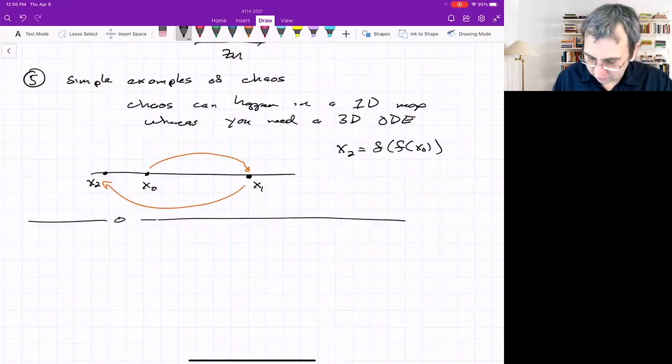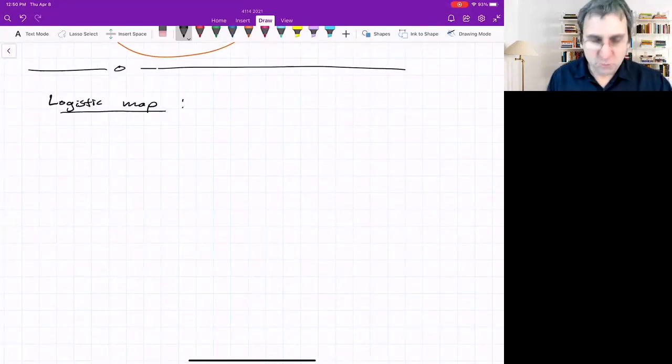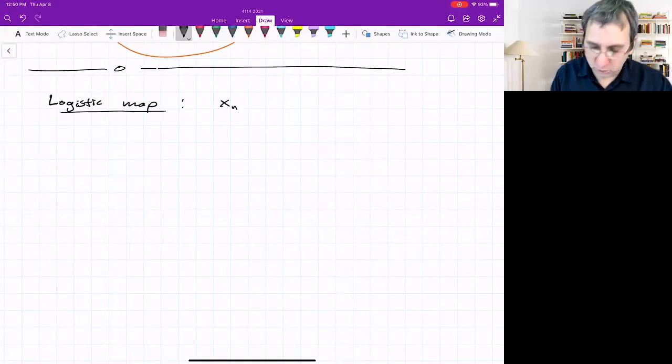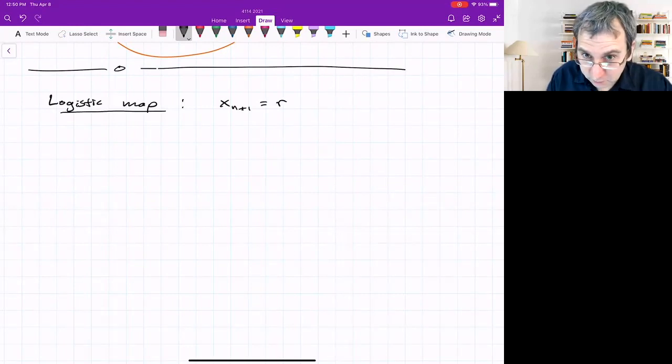The thing I'll be talking about today is the logistic map, and it's shockingly simple. This is just 1D. We say X_{n+1} is r times X_n times 1 minus X_n, where r is a parameter we could vary.